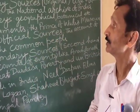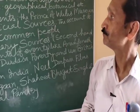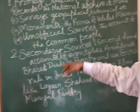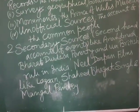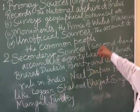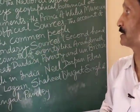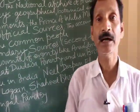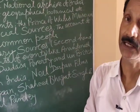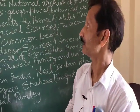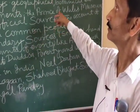These buildings are sources for the modern period. Unofficial sources are the accounts of common people. Common people of India also wrote about the modern period in those times, and these are grouped into unofficial sources for modern history.